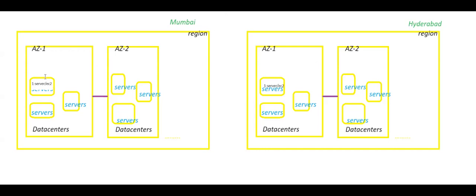Now let's say I have a requirement that I want to have communication between this EC2 instance in Mumbai region and this EC2 instance in Hyderabad region. How can I provide communication between them?